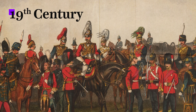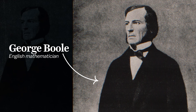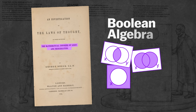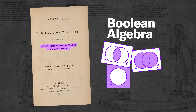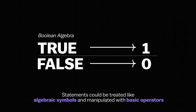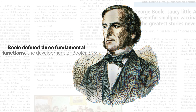In the 19th century, English mathematician George Boole described the concept we know as Boolean Algebra. His insight was that true or false statements could be treated like algebraic symbols and manipulated with basic operators.